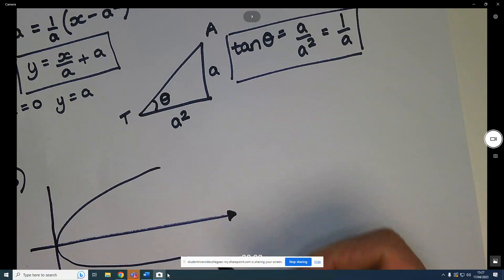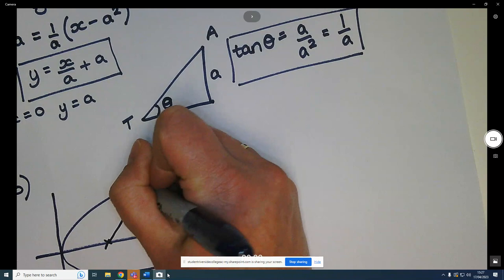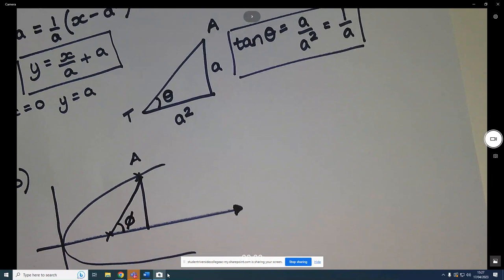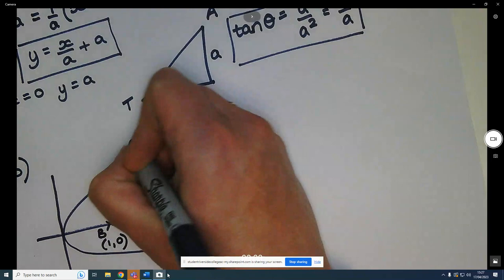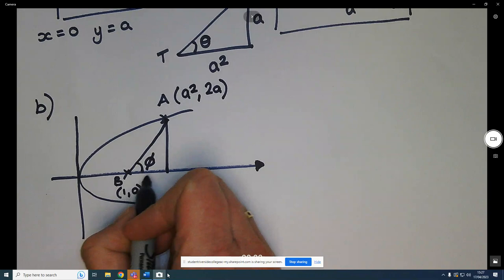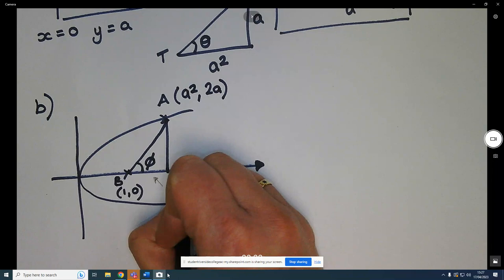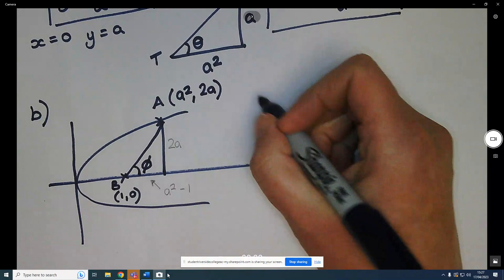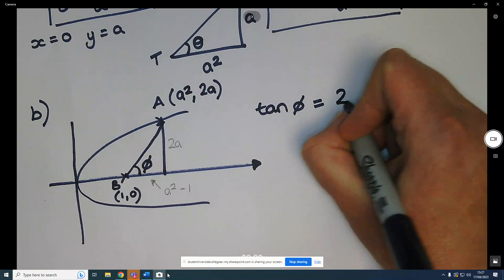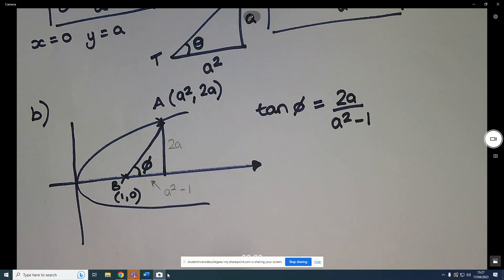Right, so we've still got this thing going on. And this time that's A, this is B. And this angle here is phi. Right, so what do we know? We know that B is 1, 0, and we know that A is a squared, 2a. So we can say that this length here is going to be a squared minus 1, and this length here is going to be 2a. So tan of phi is equal to the opposite over the adjacent, so 2a over a squared minus 1. And that's the answer for part B. That was a lot easier than the other one.